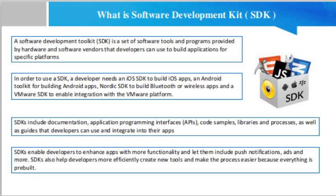What is the difference between SDK and API? An API is code that enables two software programs to communicate with each other. An API defines the correct way for a developer to request services from an operating system or other application and expose data within different contexts and across multiple channels.